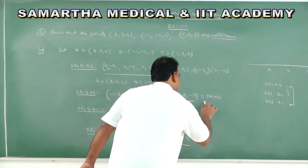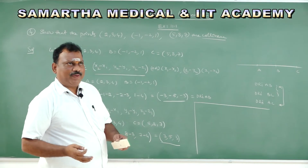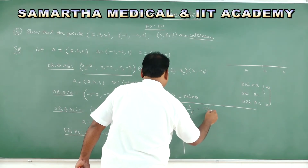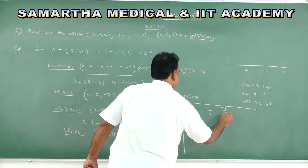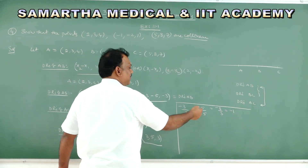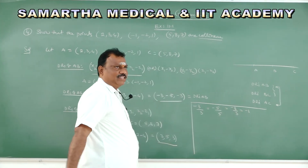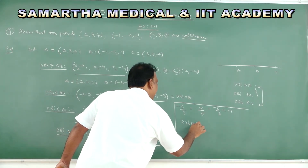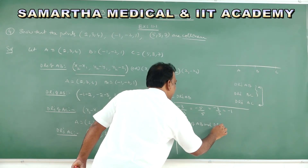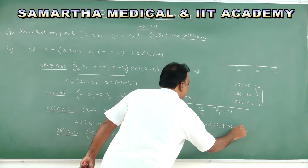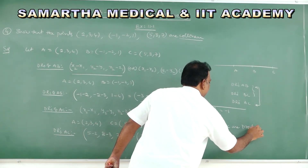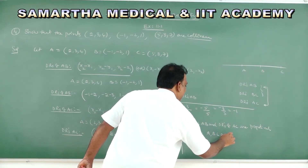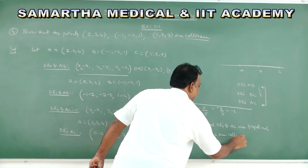Direction ratios of AB and AC are proportional. Hence A, B, C are collinear. This is the required answer.